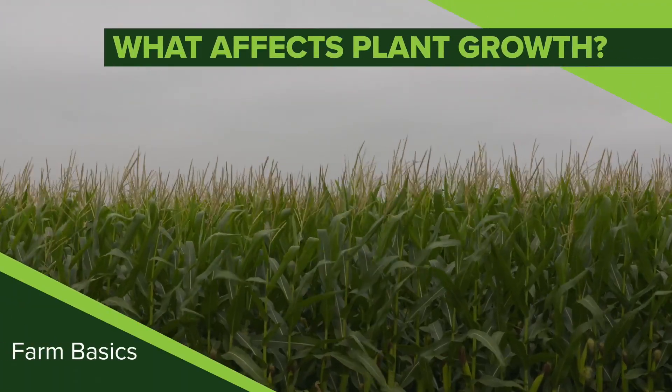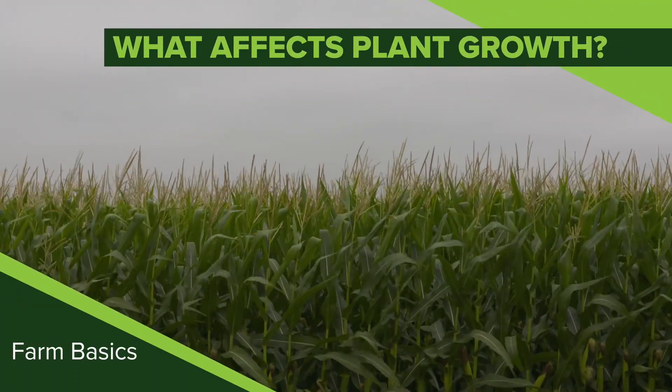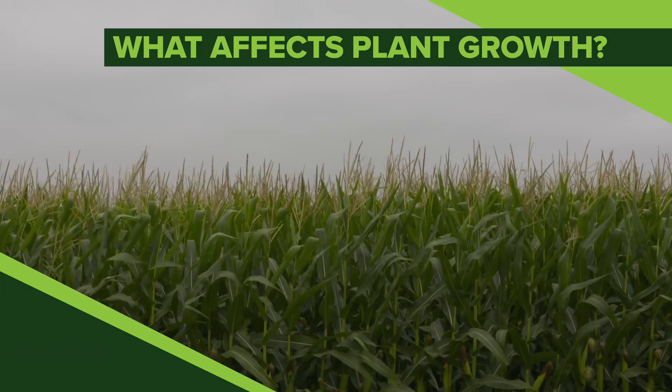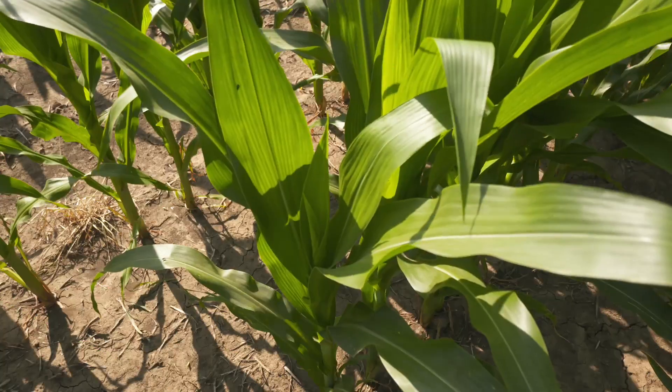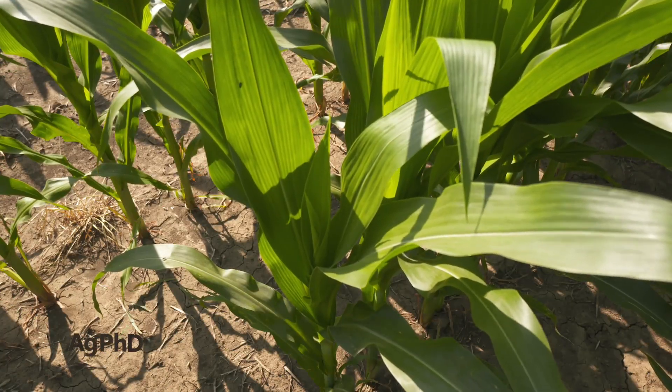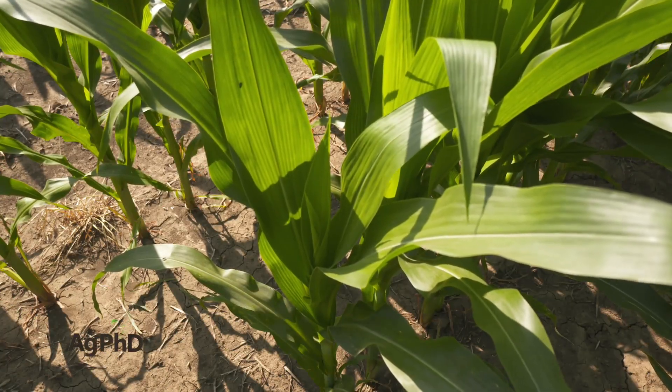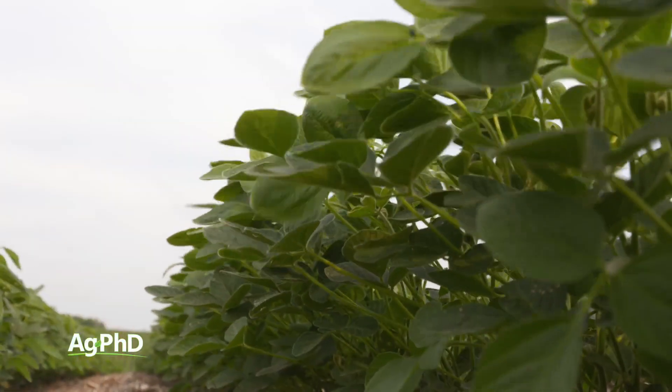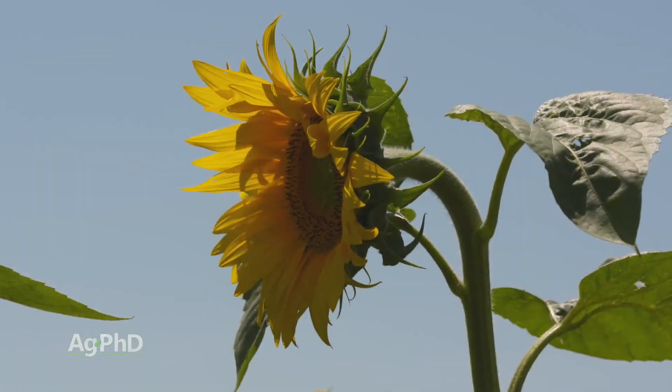One of the questions we get most often from non-farmers is: how come sometimes your corn plants are really tall and sometimes they're a lot shorter? Same thing we see in soybeans, same thing in sunflowers or wheat or almost any crop. What influences plant height? That's our topic during our Farm Basics time today.